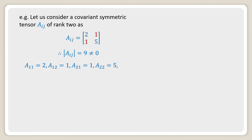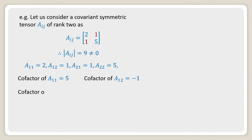The values of A12 and A21 are the same because this is a covariant symmetric tensor. The cofactor of A11 is 5, the cofactor of A12 is minus 1, the cofactor of A21 equals minus 1, and the cofactor of A22 equals 2. Therefore A upper 11 equals 5 over 9, since this is the cofactor of A11 divided by the determinant of Aij, that is 5 over 9.